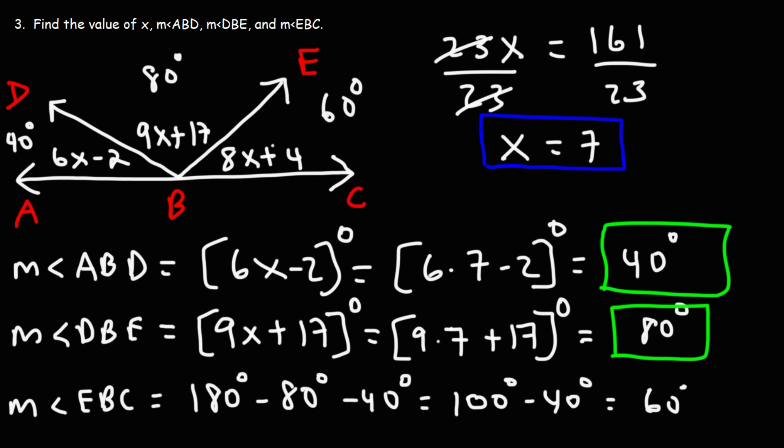So that's the missing angle. So now we know the value of X and the values of the three angles here: 40, 80, and 60. So that's basically it for this video. Now you know how to solve geometry problems that have some algebra in it, but that's associated with complementary angles and supplementary angles.